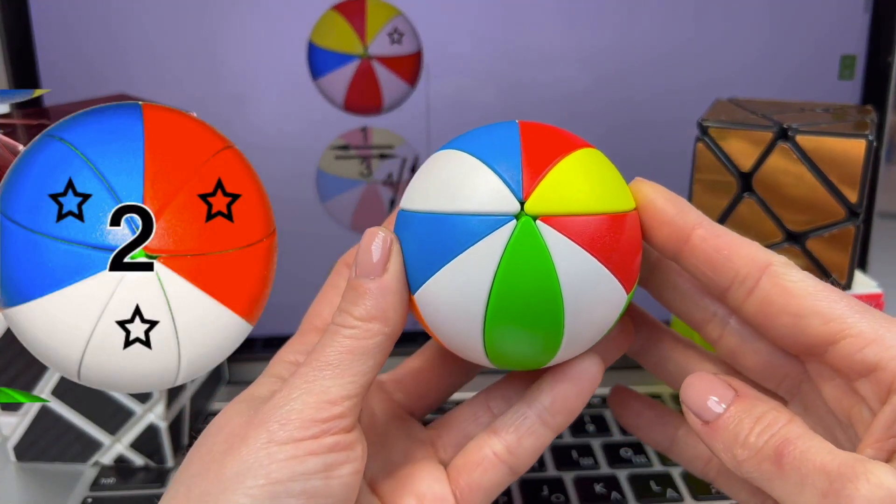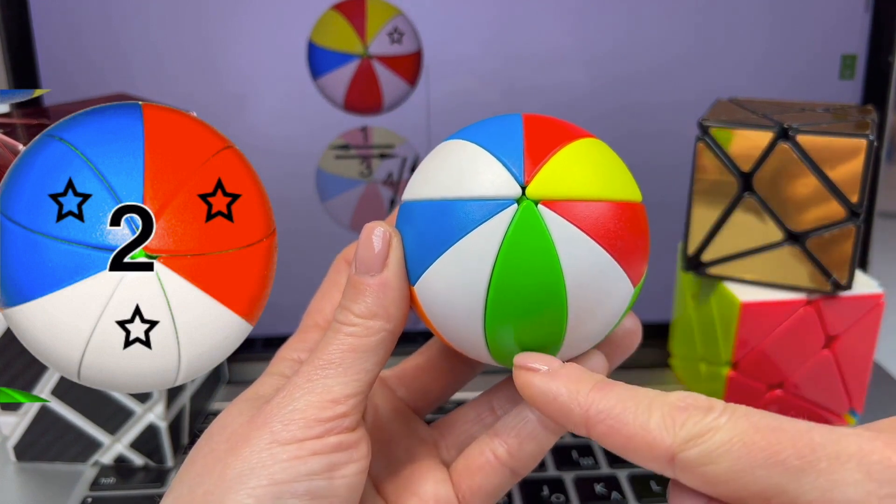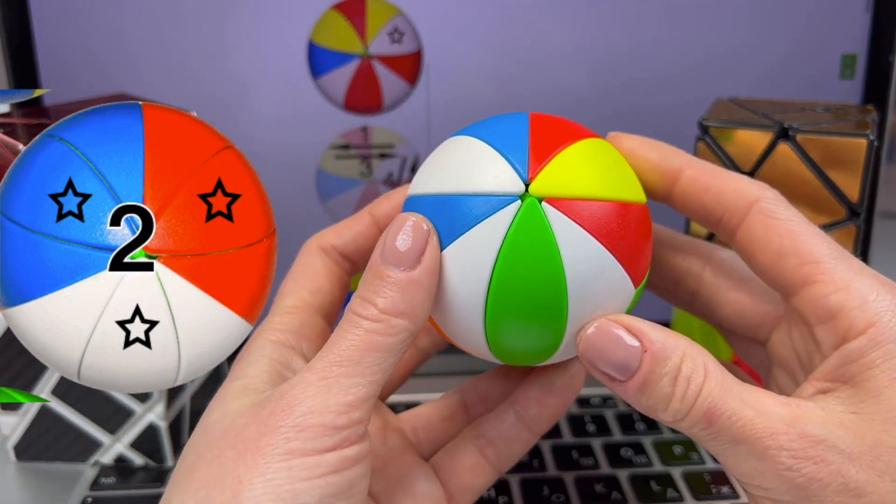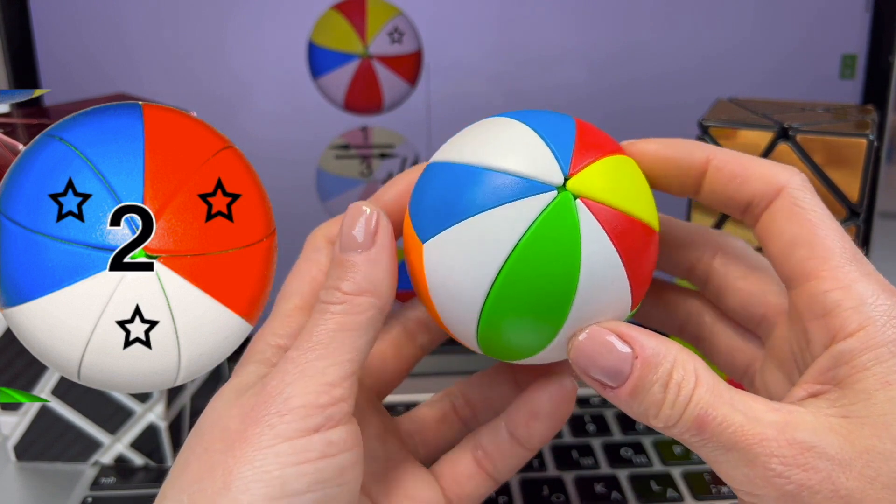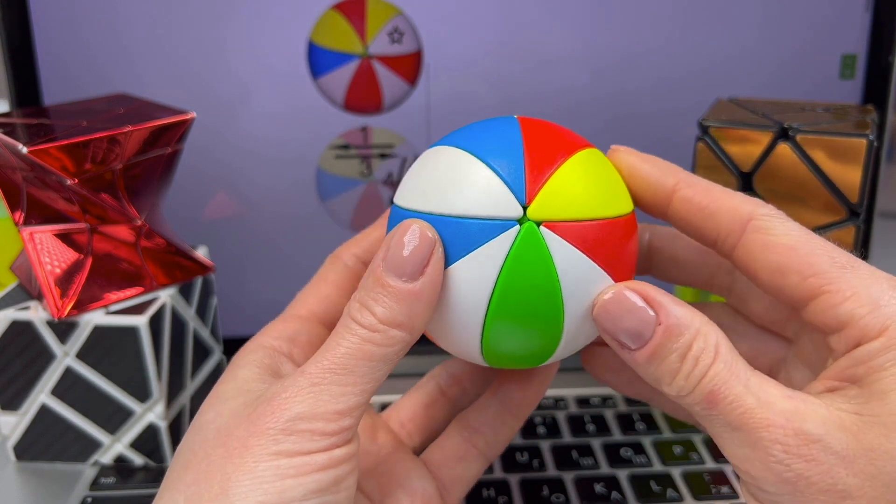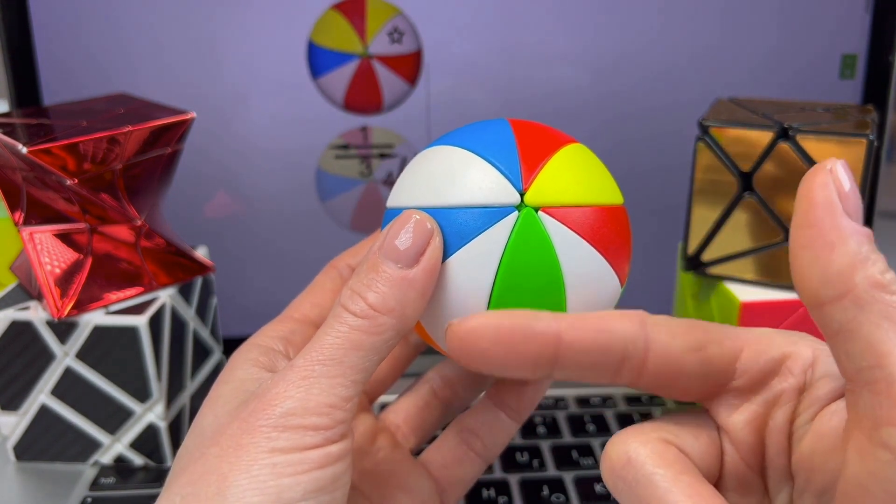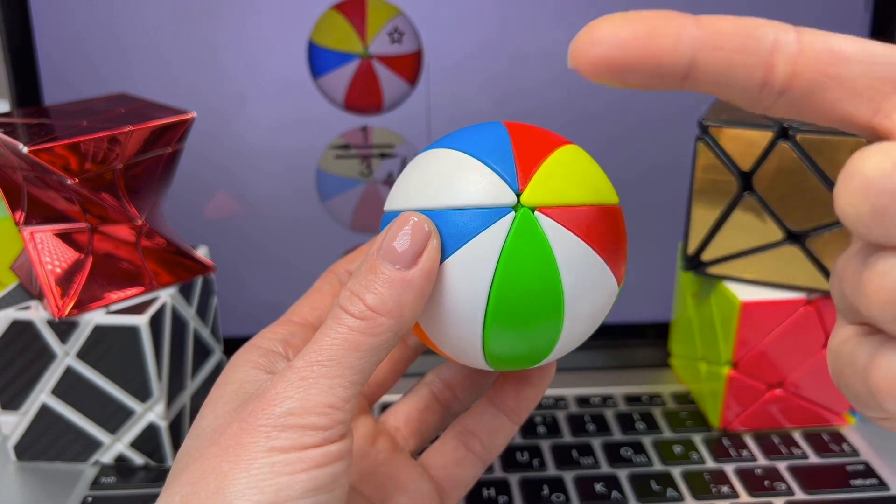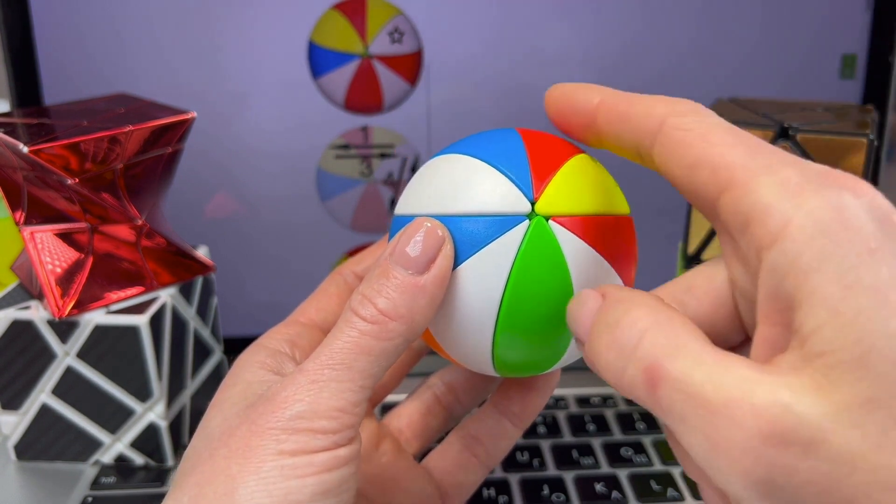In the second stage, we assemble the petals of the white side, the red side, and the blue side. Well, let's start with assembling the white petal. We take the puzzle in such a way that the white side is here. I'm lucky right now, because the white petal is on the same layer. But since it's on the left, we already know that we can apply the left-hand algorithm. And this white petal will take its correct position.